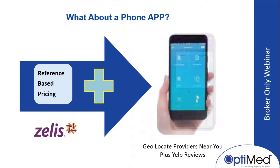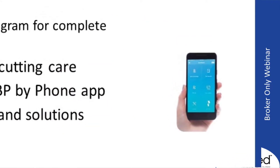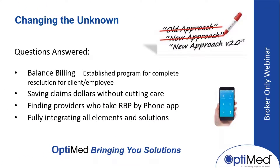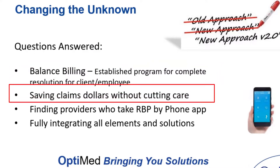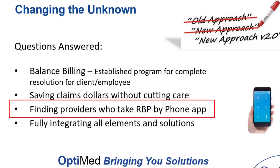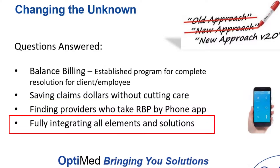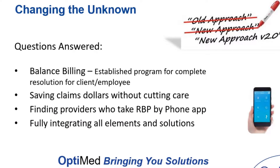We've changed the unknown. We had the old approach of traditional insurance plans, we moved to a new approach of level-funded plans over the last five years, and now let's move to version 2.0 — no balance billing, reference-based pricing. We're going to save claims for the employee and for the employer claims account. We're going to help them find reference-based providers by phone app. We're fully integrating all elements and solutions, bringing you answers to the questions you've been asking.